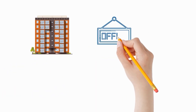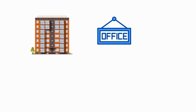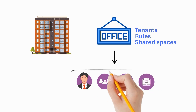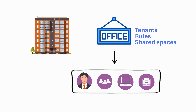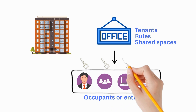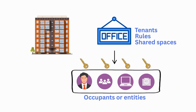Think of it as the centralized hub where all the essential objects that form your tenant are stored and managed. Picture the tenant as an apartment complex and the directory as the central office that organizes everything inside the building. The directory oversees and organizes everything within the complex, like tenants, rules and shared spaces. Each item in the directory, such as user accounts, groups, devices and apps, is like an occupant or entity in the building. The office ensures everyone has the right keys to access only the spaces they're allowed to use, keeping everything secure and running smoothly.